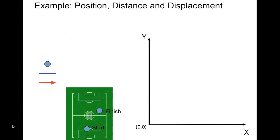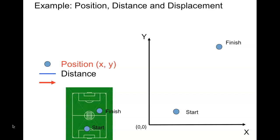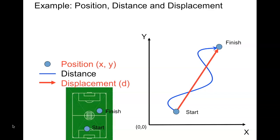To illustrate: the blue dots represent position, and blue shows distance — it did not travel in a straight line, so we just care about the total amount traveled, giving us a magnitude. The red arrow shows displacement — from point A to point B in a straight line with direction. Don't forget: distance is scalar, displacement is a vector.